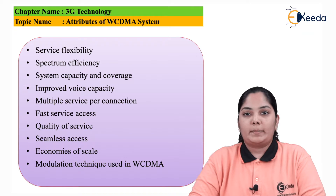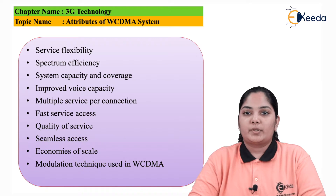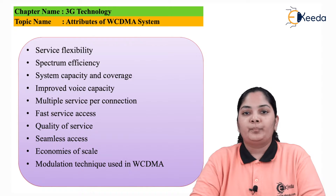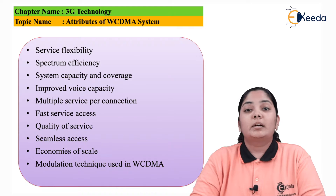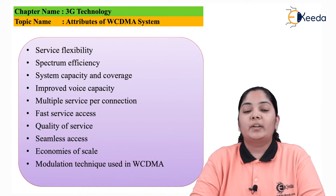The next attribute is Improved Voice Capacity. Third generation wireless systems provide better spectrum efficiency for voice transmission. Considering a service provider with 15 × 2 MHz of bandwidth available for voice communication in a sectored scenario, a single sector can support 192 simultaneous calls, and in a three-sector scenario, 576 simultaneous calls are possible.